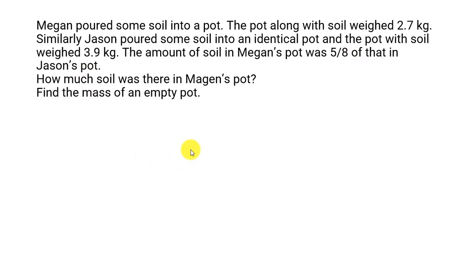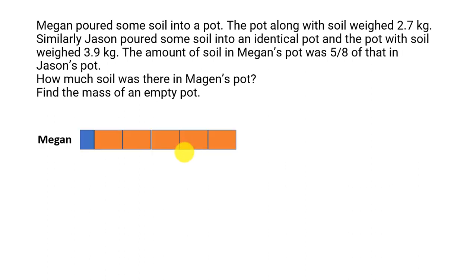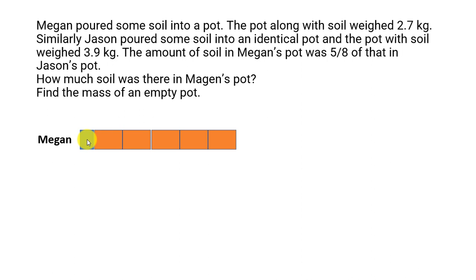Let's draw a model diagram. So Megan has five units, and there is something in addition to that. Along with this, there will be the mass of the pot. For the value of this pot, we don't know right now, but we will find out that.